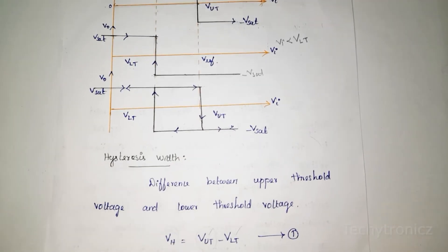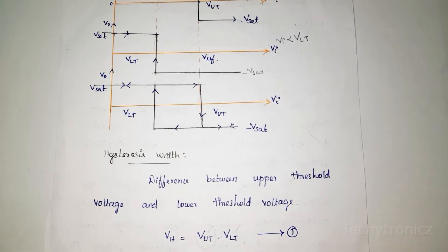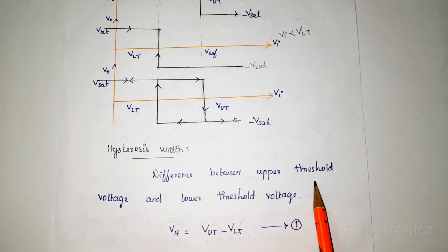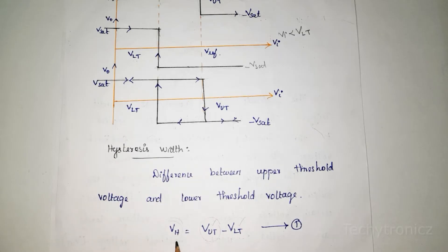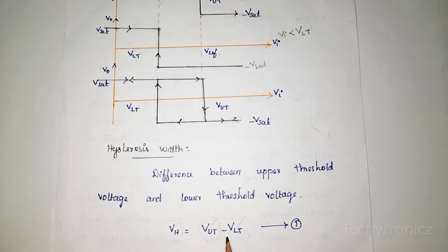Now we calculate the hysteresis width. The difference between upper threshold voltage and lower threshold voltage is the hysteresis width, represented by VH. That is: VH = VUT minus VLT, which is upper threshold voltage minus lower threshold voltage.